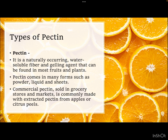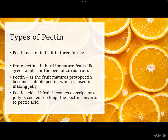Now comes a very important topic: pectin. Pectin is essential for making jam, marmalade, and jelly. It is a naturally occurring water-soluble fiber and gelling agent found in most fruits and plants. Pectin comes in many forms such as powder, liquid, and sheets. Commercial pectin sold in stores is commonly made from extracted pectin from apple or citrus peels. In terms of food chemistry, pectin is a complex polysaccharide — a polymer whose monomer is galacturonic acid — so it can be called polygalacturonic acid.